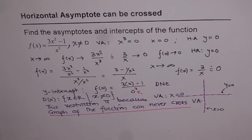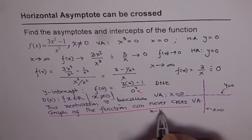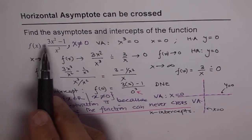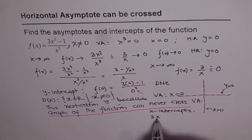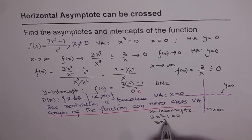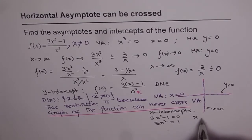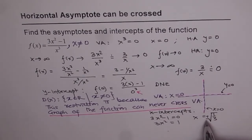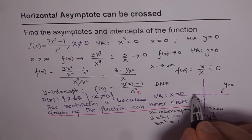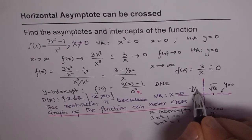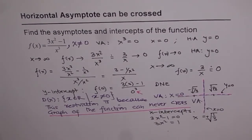But how about x-intercepts? For x-intercepts, y = 0, meaning f(x) = 0, which means the numerator equals 0: 3x² − 1 = 0. Solving: 3x² = 1, so x = ±√(1/3). We get two x-intercepts — one at √(1/3) and one at −√(1/3), symmetrically placed.